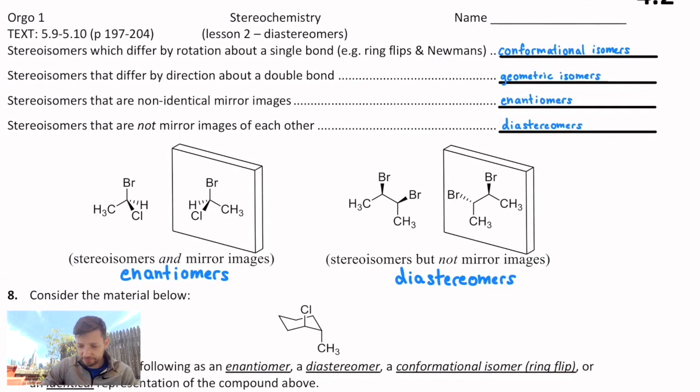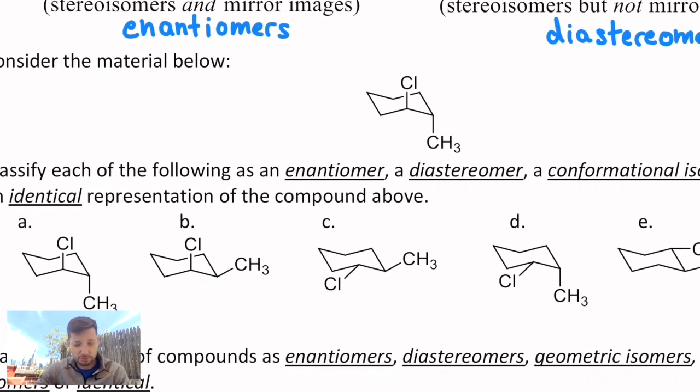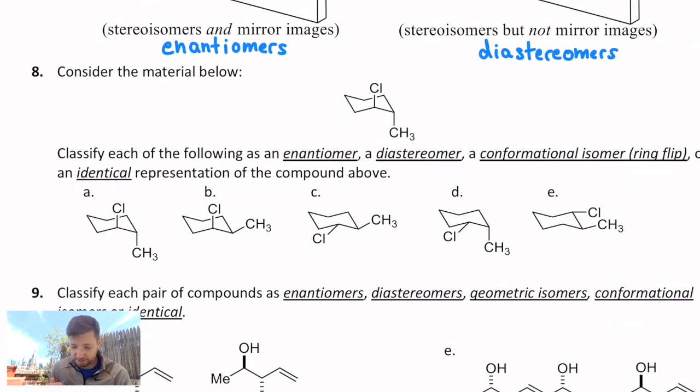So let's look at an example and try to classify different representations of a molecule based on these new terms that we have combining with some old ones. Here is a chloromethyl cyclohexane just drawn in a chair and a bunch of different representations of similar, sometimes the same, molecules. Is this an enantiomer, a diastereomer, a conformational isomer, or is it the same as what's up above?